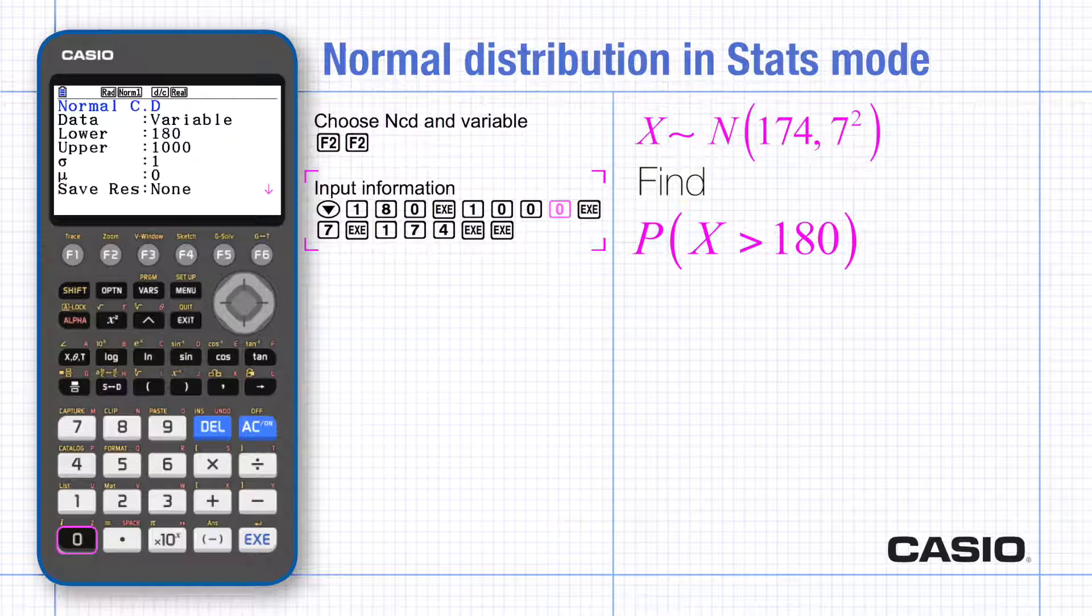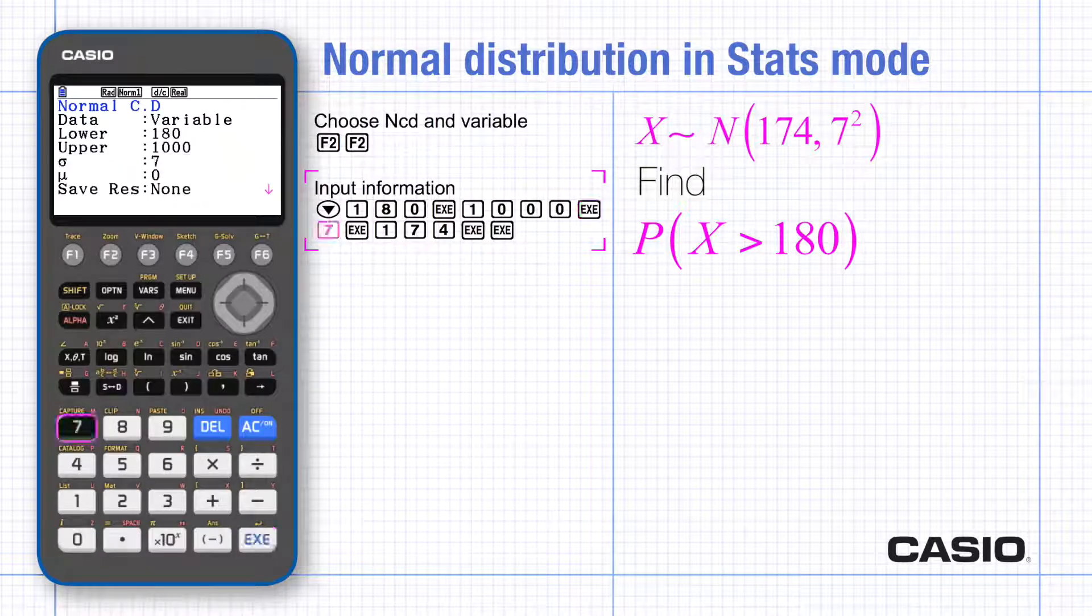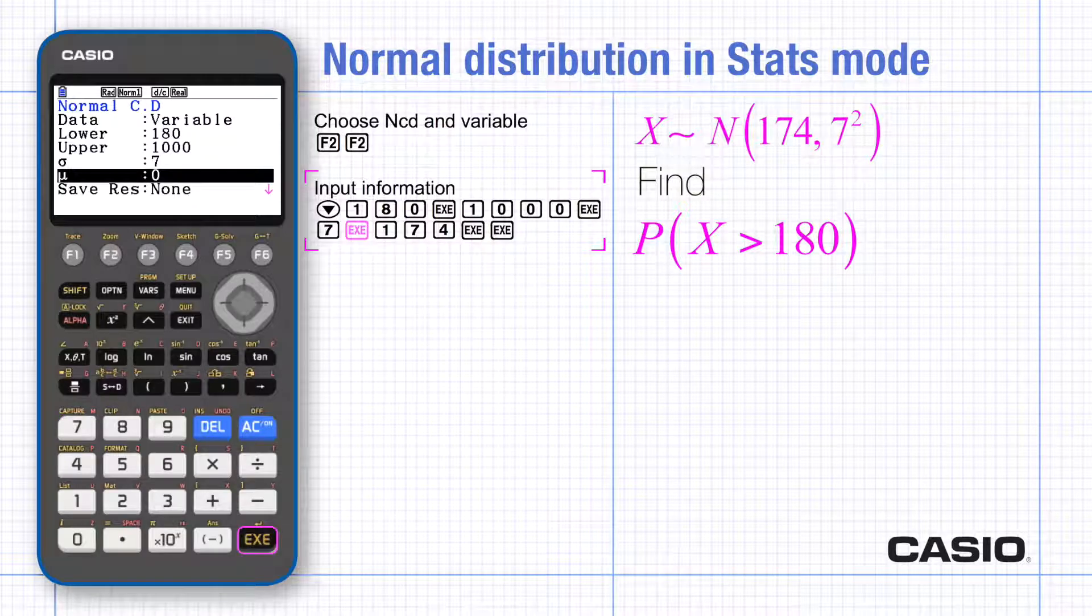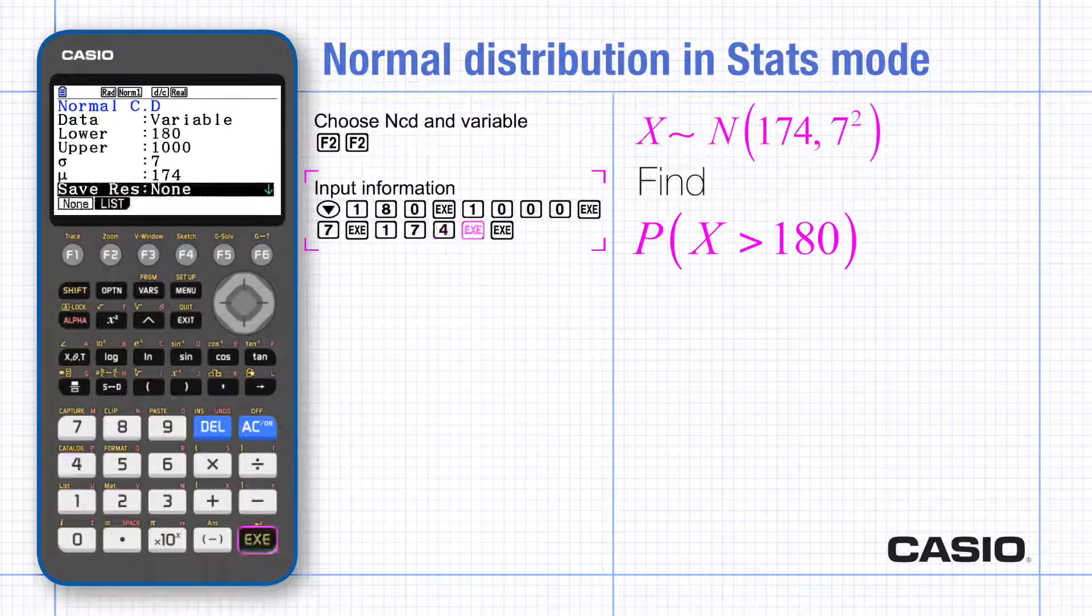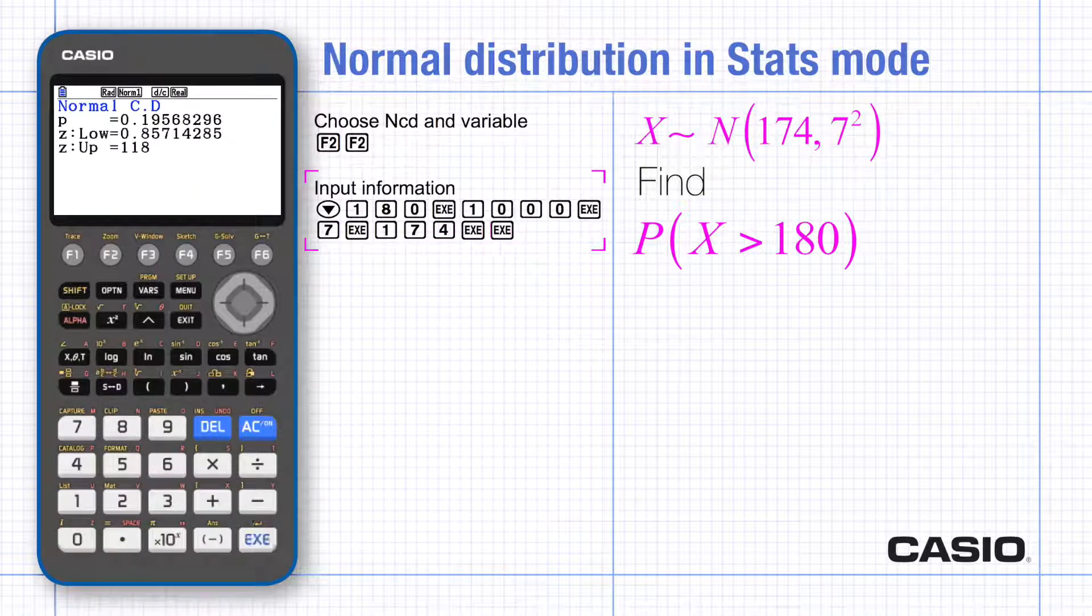Next the standard deviation and lastly the mean. The order here may catch you out. And then execute and the probability is given. Notice the Z values for the boundaries are also given.